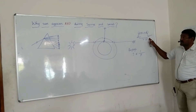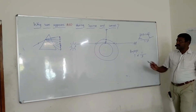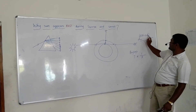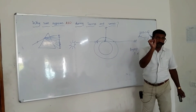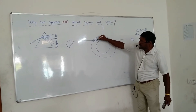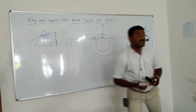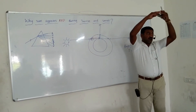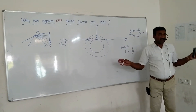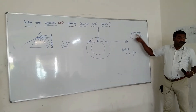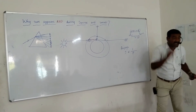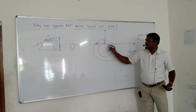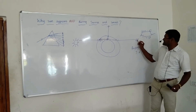Red color light has least scattering because it has the highest wavelength. When sunlight passes through a long stretch of atmosphere, all the violet, indigo, blue, green, yellow, and orange light gets scattered by atmospheric particles. But red color light, having maximum wavelength, undergoes least scattering and reaches the observer. That is why that part of the sky appears red.